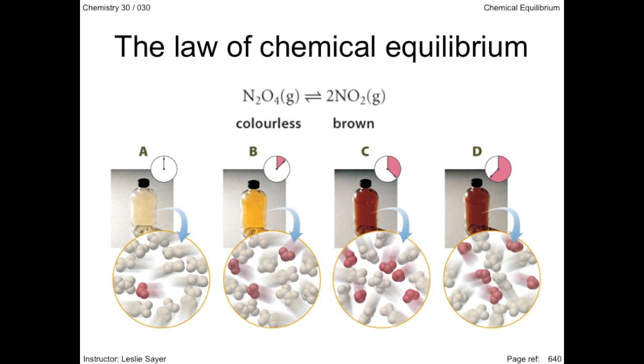Don't try to look for a difference between images C and D, they are the same, indicating that the forward reaction rate is now the same as the reverse reaction rate. Macroscopically, this is indicated by no further color change. In other words, the reaction has reached equilibrium.